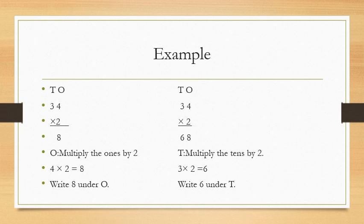Now children, let us understand this with an example. Look at the example children — here you have to multiply thirty four by two. First we will multiply the ones by two. That is four multiply by two is equal to eight. So children, write eight under ones.